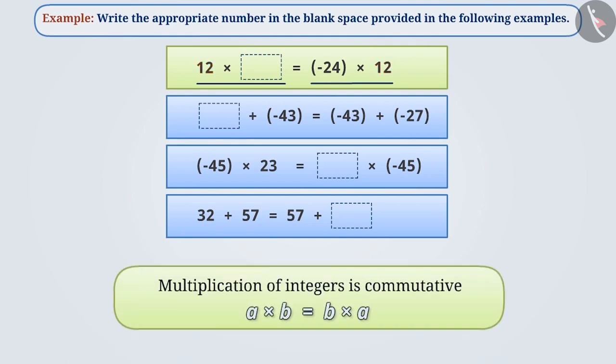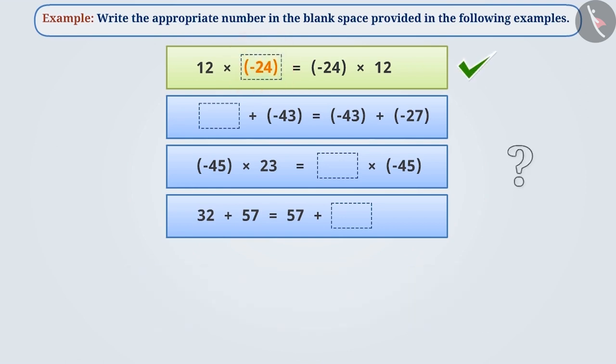We can also see that the integer 12 on the right side and left side is same. Since the multiplication of integers is commutative, that is, for integers a and b, a multiplied by b is equal to b multiplied by a, so we can say that minus 24 can be written in the blank space provided. Thus, by using the commutative property of multiplication of integers, we can easily fill in the blank without calculating the product.